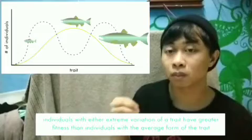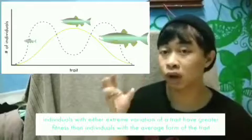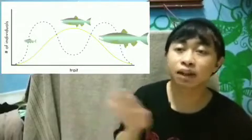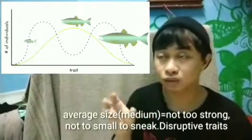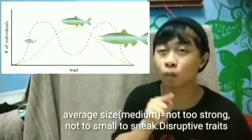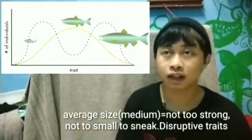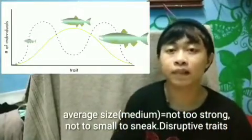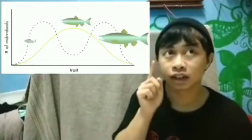Dalam case fertilisasi female, average ini kurang berguna dan kurang survive. Yang besar mempunyai kelebihan — lebih kuat untuk bersaing dengan ikan lain. Yang kecil pula boleh menyusup masuk dan bersenyawa dengan female tanpa disedari ikan besar. Yang medium jadi masalah — tidak terlalu kuat untuk berlawan dan tidak terlalu kecil untuk menyusup — so population dia berkurang, manakala yang kecil dan besar meningkat.